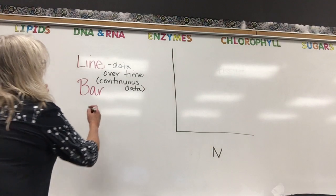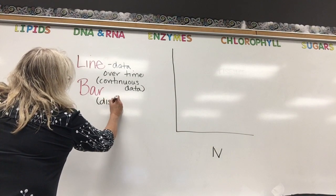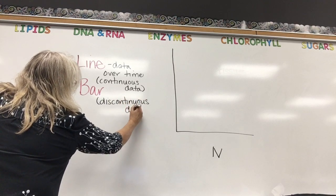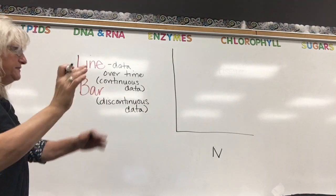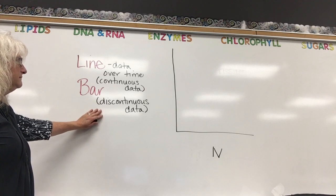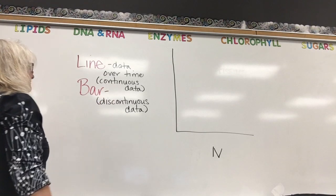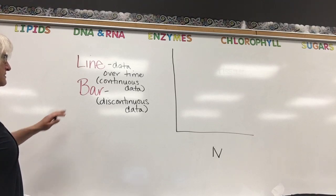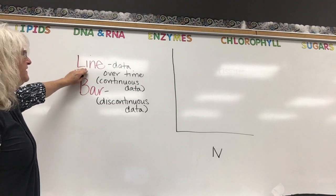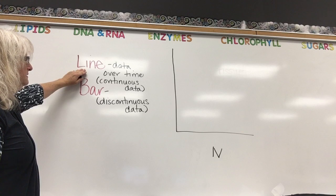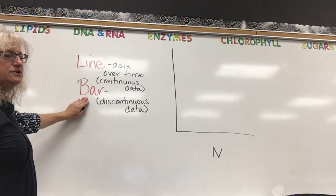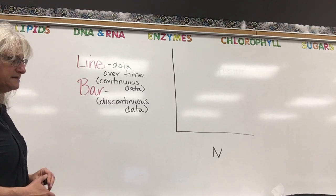The bar graph is for discontinuous data. In other words, we start at the beginning and come up with one result at the end — that's discontinuous data. Today we're going to be using a bar graph for this data. There are some variations of each that you'll learn throughout high school — when to use a best-fit line, when to connect the dots, a histogram, maybe a pie chart. There are various variations of the bar graph showing discontinuous data.